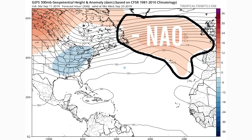With a negative NAO, things are completely different for the eastern United States. We have positive heights just to the south of Greenland, which is going to be a lot of what we'll see in the upcoming fall and winter pattern. The warmer temperatures in the northern Atlantic near Greenland and Iceland encourage positive heights there, driving a negative NAO. We see a big ridge in the western United States and a big trough in the eastern United States — this could be a pretty common look for this coming fall and winter.